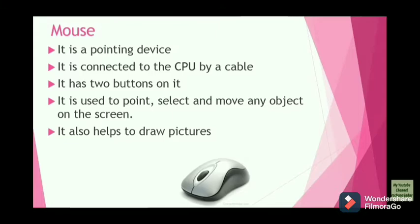A mouse is a pointing device. It is connected to the CPU by cable, but nowadays we also have wireless mice. A mouse has two buttons — one on the left and another on the right. It is used to point, select, and move any object on the screen. It also helps us draw and play games. A scroll mouse has a scroll wheel in the middle, which helps you move up and down in a page.